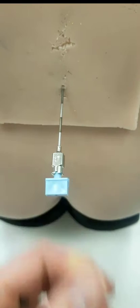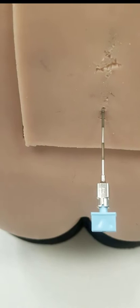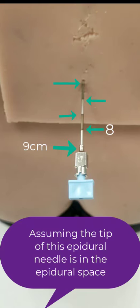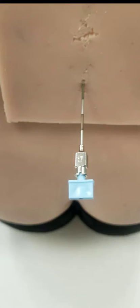Remember that we're going to count backwards on these needles if they're already in the back. You're going to count from the end of the actual needle, which is 9, and work your way back with each line marking, which will be 1 centimeter each. So the next line would be 8, then 7, 6, and in this case 5 is at the skin.